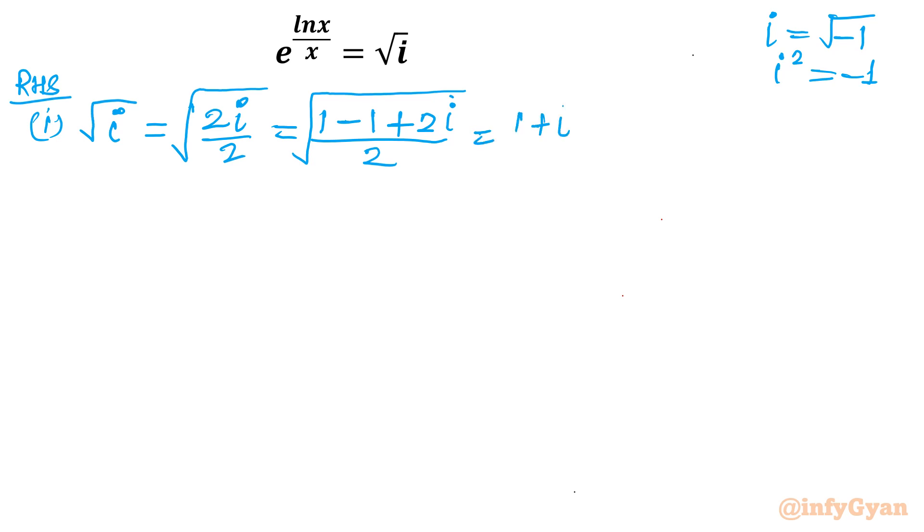So in place of minus 1 I will write i square. So 1 plus i square plus 2i divided by 2. Okay, now you can see it is 1 square plus i square plus 2 times 1 times i. What I am transforming actually? a plus b whole square.